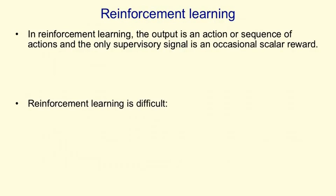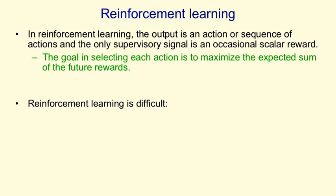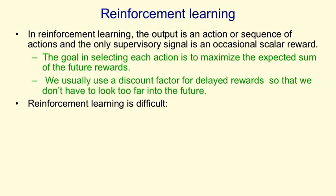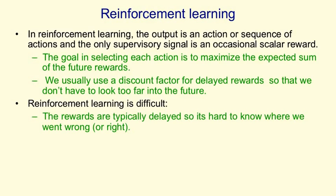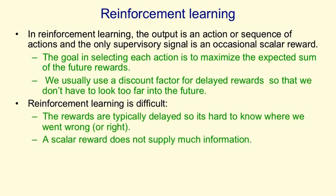In reinforcement learning, the output is an action or sequence of actions, and you have to decide on those actions based on occasional rewards. The goal in selecting each action is to maximise the expected sum of the future rewards. We typically use a discount factor so rewards far in the future don't count for as much as rewards that come quickly. Reinforcement learning is difficult because the rewards are typically delayed, making it hard to know which action was wrong in a long sequence. Also, a scalar reward that only occurs occasionally does not supply much information on which to base parameter changes. So typically you can't learn millions of parameters using reinforcement learning, whereas with supervised and unsupervised learning you can.